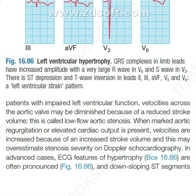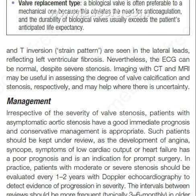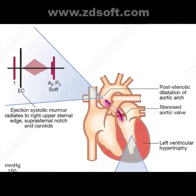In advanced cases, ECG features of hypertrophy are often pronounced, with down-sloping ST segments and T-wave inversion strain pattern seen in the lateral leads, reflecting left ventricular fibrosis. Nevertheless, the ECG can be normal despite severe stenosis. Imaging with CT and MRI may be useful in assessing the degree of valve calcification and stenosis respectively, and may help where there is uncertainty. The imaging figure shows left ventricular hypertrophy with stenotic aortic valve and post-stenotic dilatation of the aortic arch.